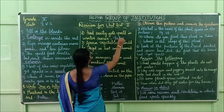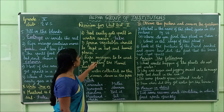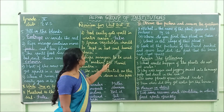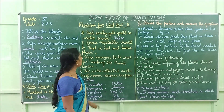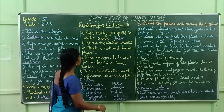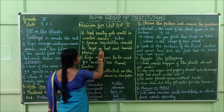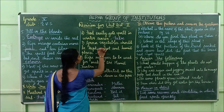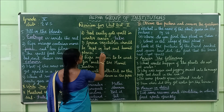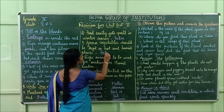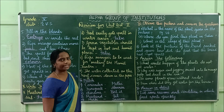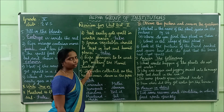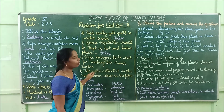Third one: green vegetables should be kept in hot and humid places — false. These are green vegetables; in the hot and humid conditions, they will get spoiled. So the answer is false.